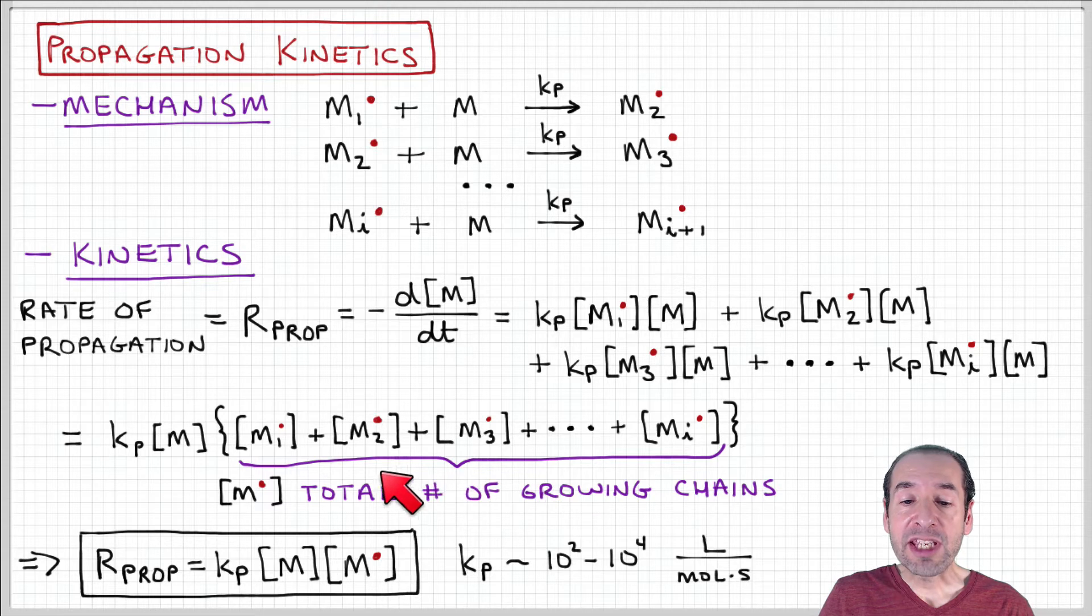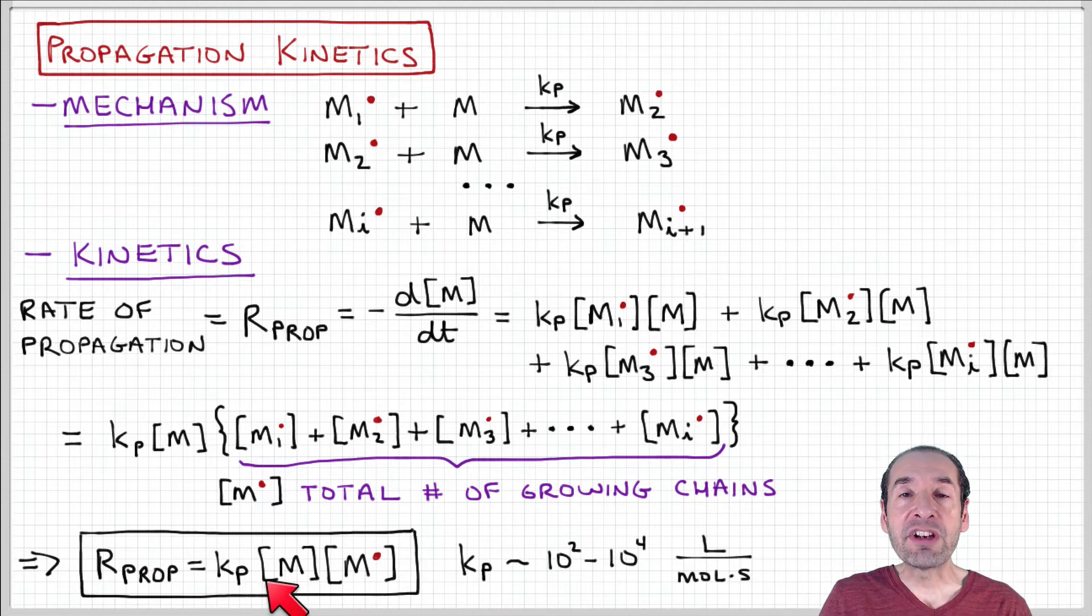We can write our rate law as follows: the rate of propagation is equal to the propagation rate constant times the monomer concentration times the total concentration of active chains in the sample.